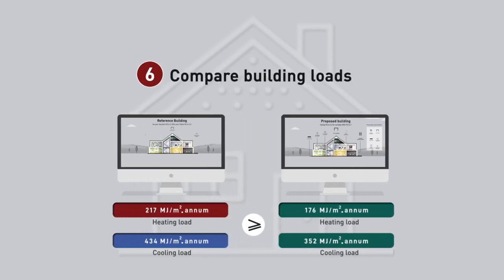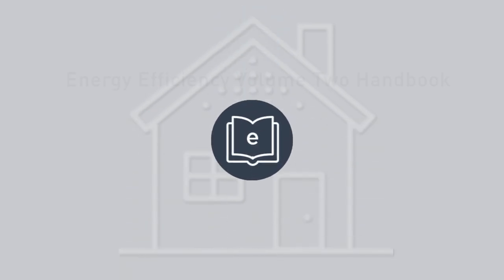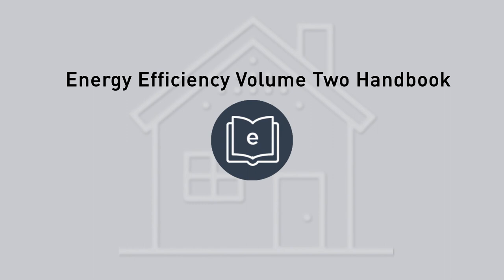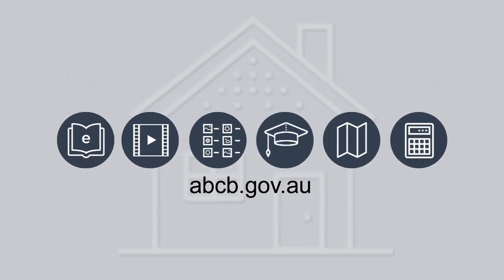And lastly, in step six, compare the reference and proposed building's heating and or cooling loads. If the proposed building has a heating or cooling load which matches or is less than the reference building, then compliance is verified. If not, make design adjustments and repeat from step four, or use a different assessment method. This verification method is clearly outlined with worked examples in the handbook Energy Efficiency NCC Volume 2. The handbook and other resources are available from the ABCB website.